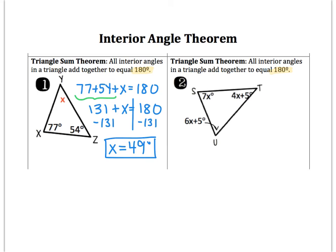If we look at example two, it starts to get a little more complex because instead of just angle measures, we now have expressions for each angle. But I'm still going to set it up the same, which is to add all three together. I would have 7x plus 4x plus 5 plus 6x plus 5, and again, I'm going to set that equal to 180.